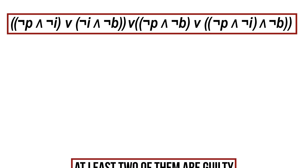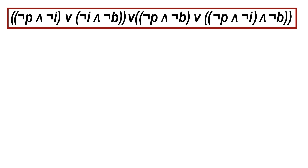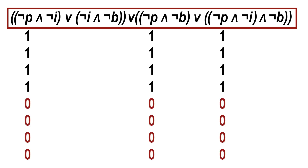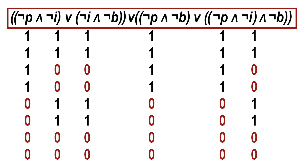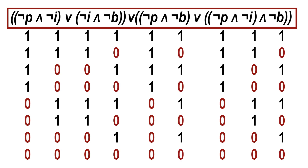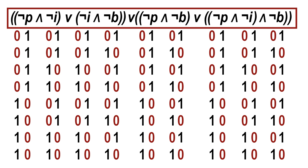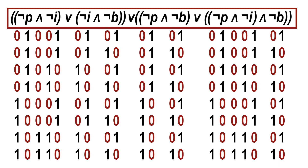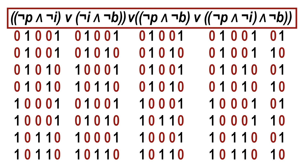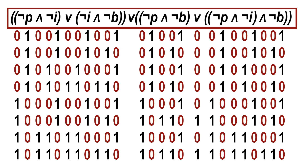We write down all eight possible situations. For P, we take half true and half false; we assign truth values to I in blocks of two, and alternate between true and false for B. With all combinations laid out, we start calculating: first not P, not I, and not B; then the first conjunction, which appears twice; the second conjunction; the third; and the last. Then we evaluate the first disjunction, followed by the last disjunction, and finally the whole formula.